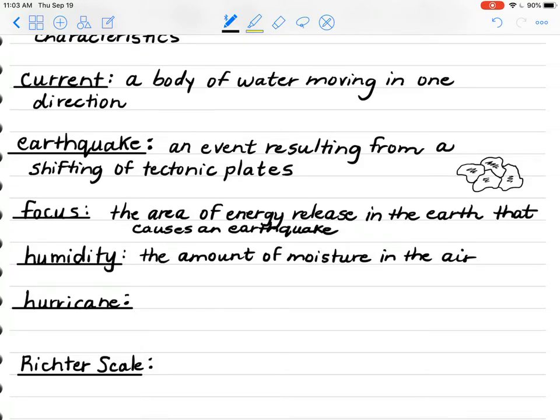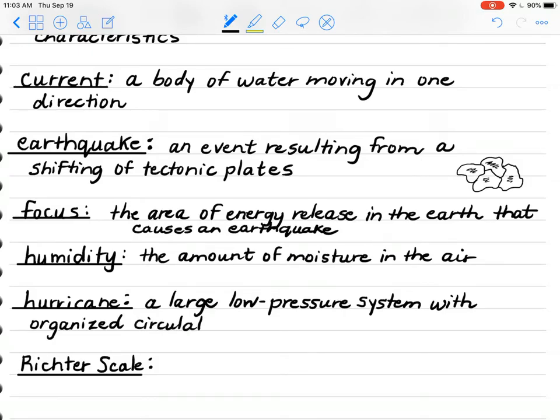A hurricane, I'm sure you have heard of that. But let's break down what it actually is. It is a large, low-pressure system. So, the barometric pressure is low in a hurricane with organized circulation. The more organized the hurricane, the stronger it's going to be. Once it gets all of its wind spinning together, that's organized. And it is an incredibly strong system. But it is associated with low barometric pressure.